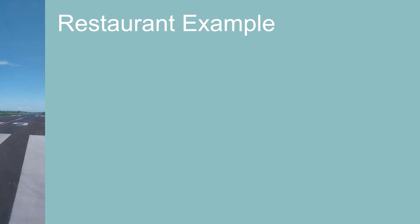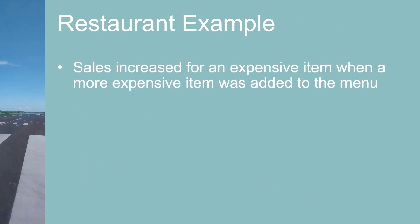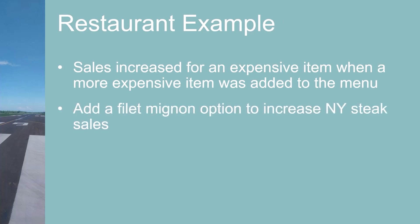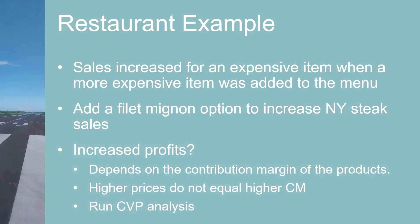A similar behavioral finding involves restaurants but likely applies to many industries: sales increased for an expensive item when a more expensive item was added to the menu. For example, if a restaurant sells hamburgers, chicken fried steak, and New York steaks, then adds an expensive filet mignon, they may sell fewer burgers and chicken fried steak but increase New York steak sales. Whether this is good depends on the contribution margin of each product — selling pricier menu options doesn't always mean increased profits — so they would want to run a CVP analysis.